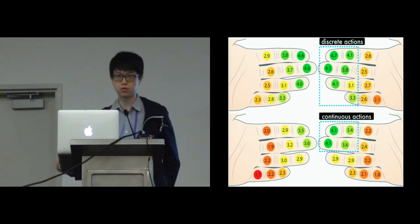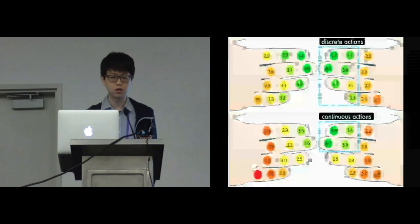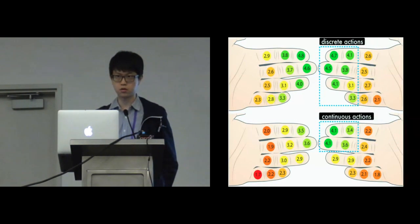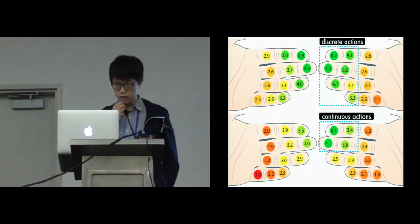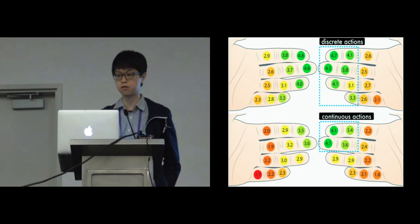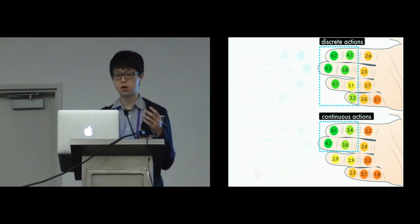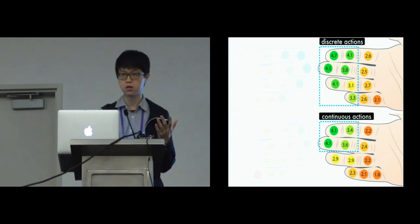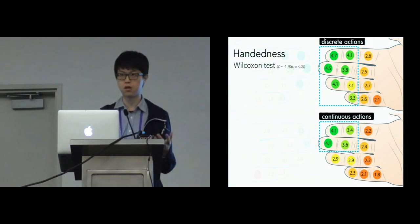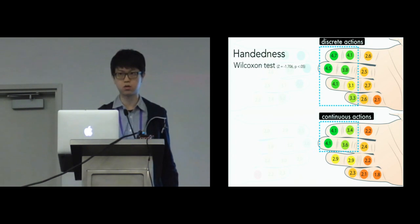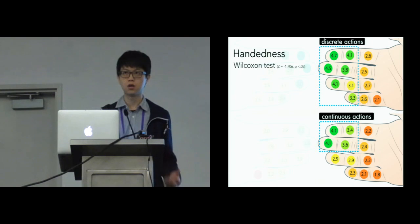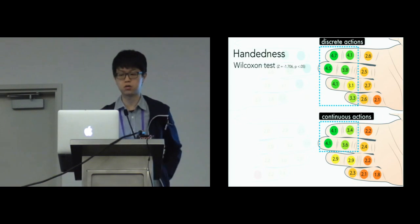These are the results of our first study — four distributions of physical comfort on fingers. Looking at the distributions, you notice two factors that affect the comfort regions. The first is handedness. According to our Wilcoxon test, there exists a significant difference between dominant and non-dominant hand. Participants report that hand dexterity is very important in this interaction — they feel uncomfortable performing actions with their non-dominant hand.